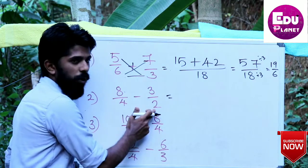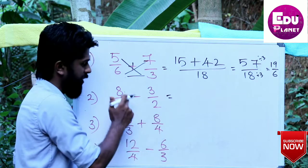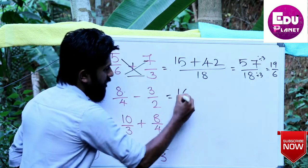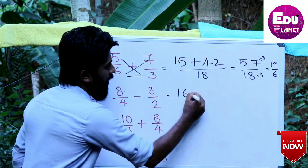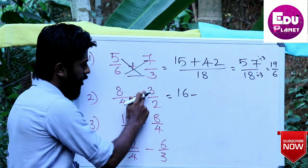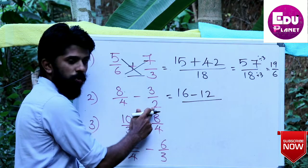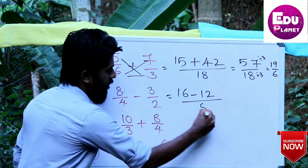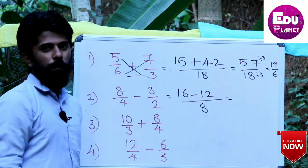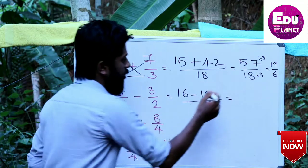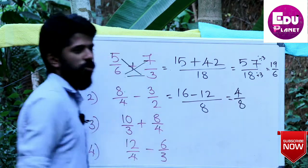Using cross multiplication for different denominators: 8 into 2 is 16. Then 3 into 3 equals 9, minus 4 into 3 equals 12, divided by 4 into 2 equals 8. The result is 16 minus 12, giving 4, over 8 — so 4 by 8.